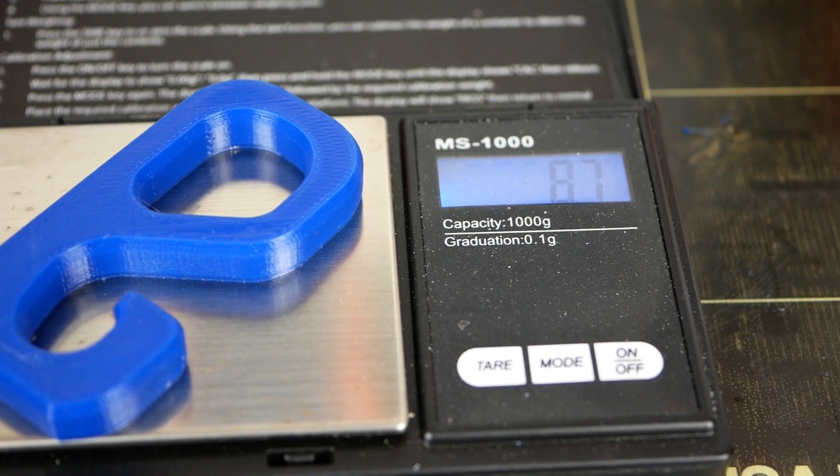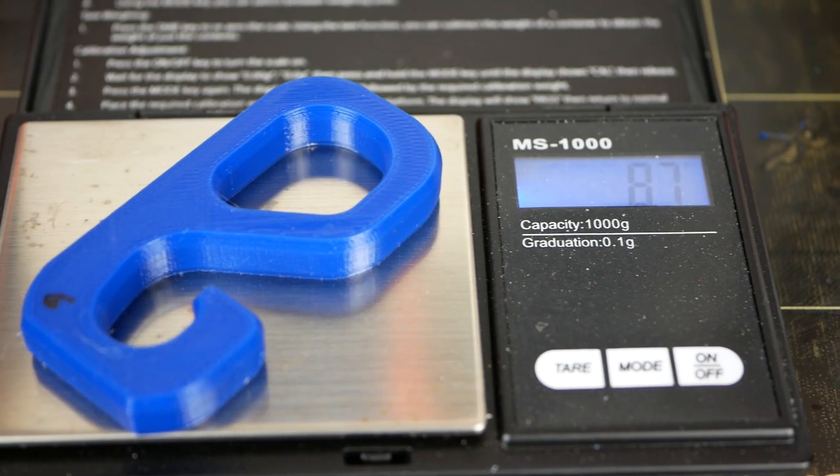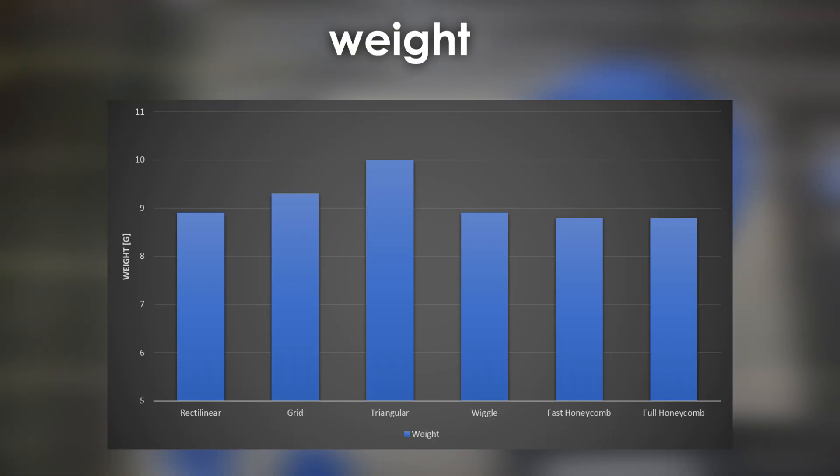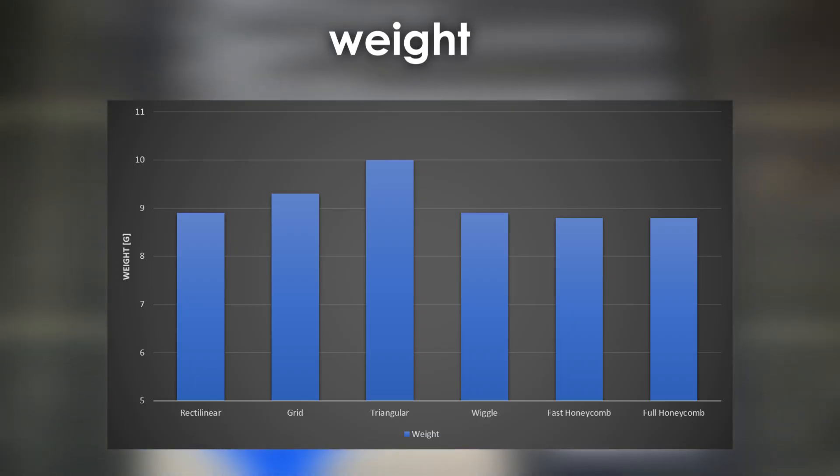Taking a look at the real final weight of the parts was pretty interesting because most of the hooks weighed around the same resulting in a calculated infill of roughly 33%. Only the hook with the triangular pattern weighed quite a bit more and ended up with a 45% infill instead of the assigned 30%.